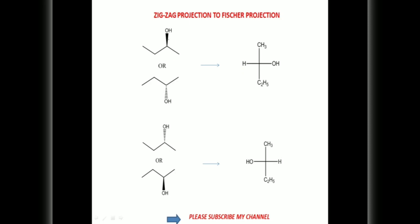In this zigzag manner, a very simple method: OH directed upward and above the plane must be on the right side. And this group — OH directed downward and below the plane — in this case also must be written on the right side.